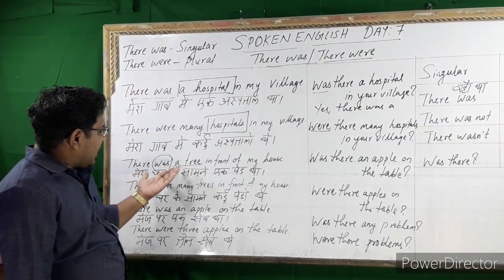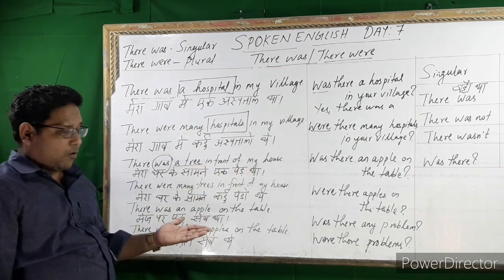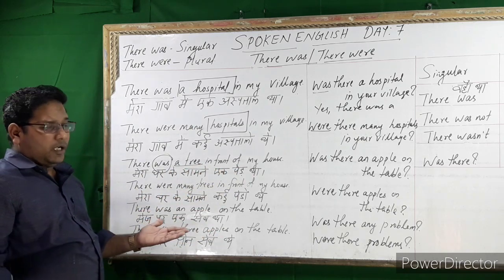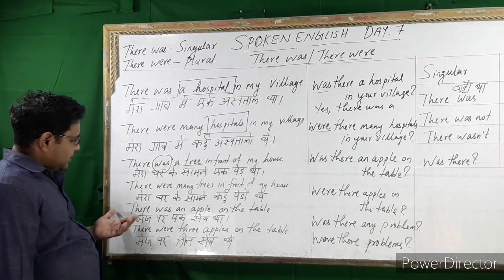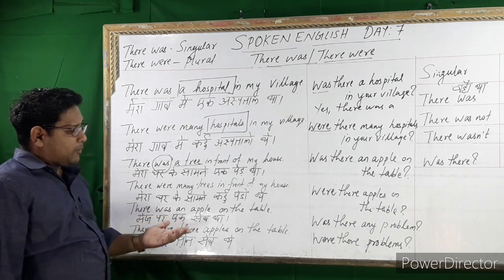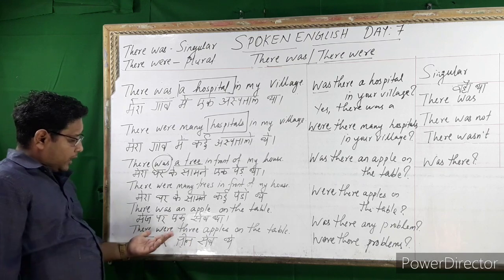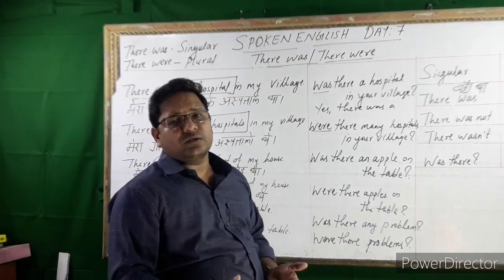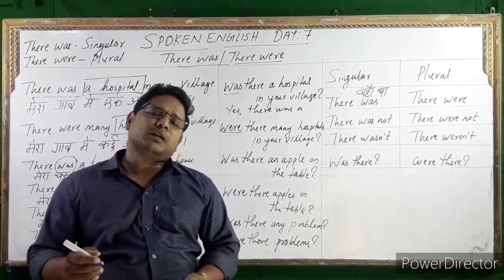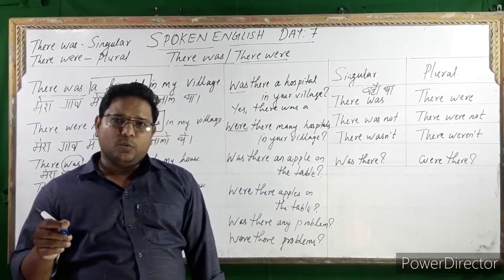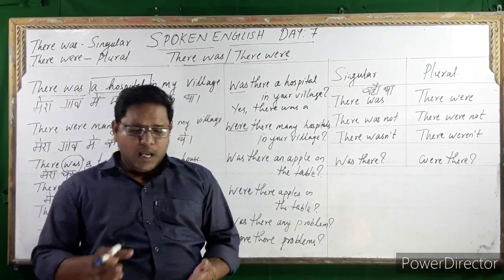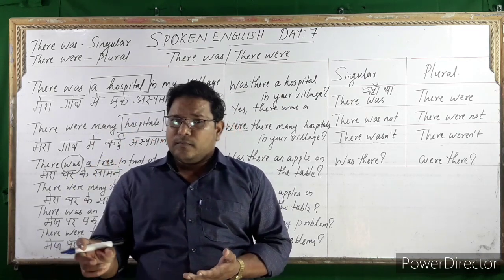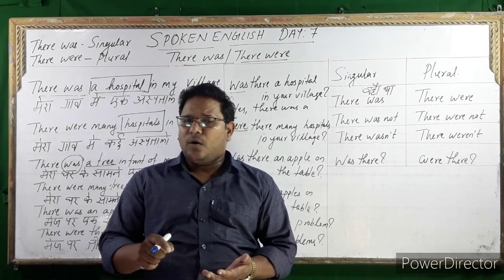'There wasn't an apple on the table.' 'There weren't three apples on the table.' In this phase we study about 'there was' and 'there were.' Now compare: 'there is,' 'there are,' 'there was,' 'there were.'